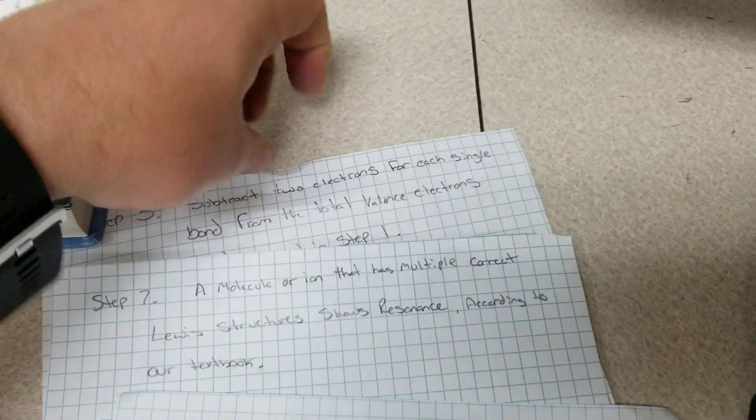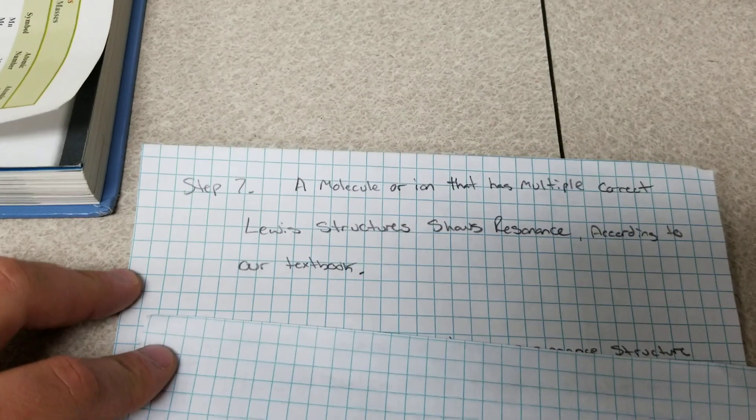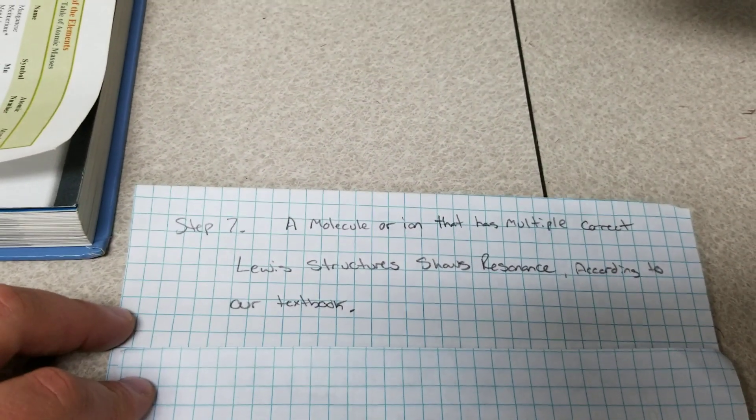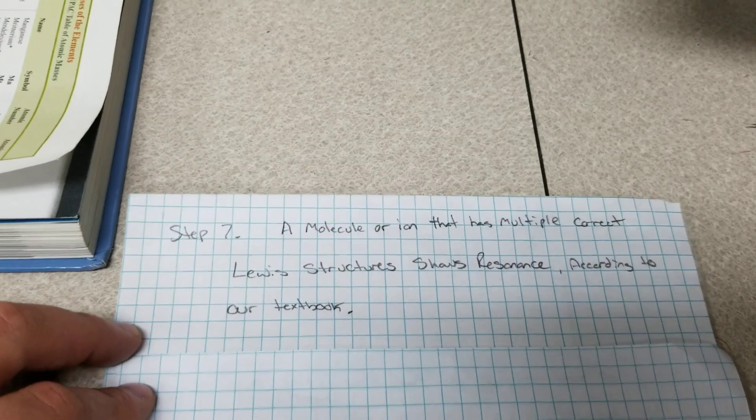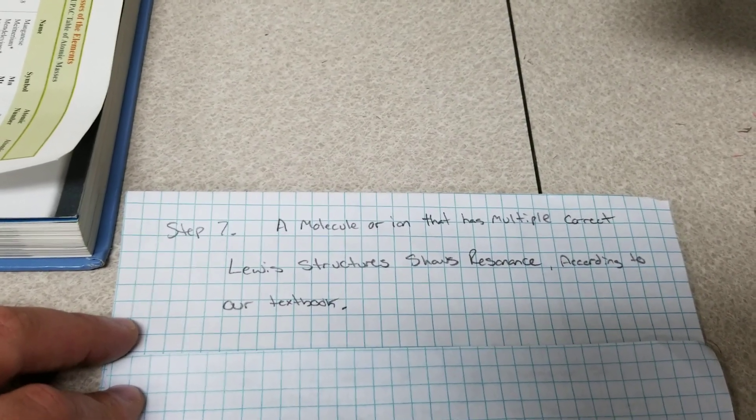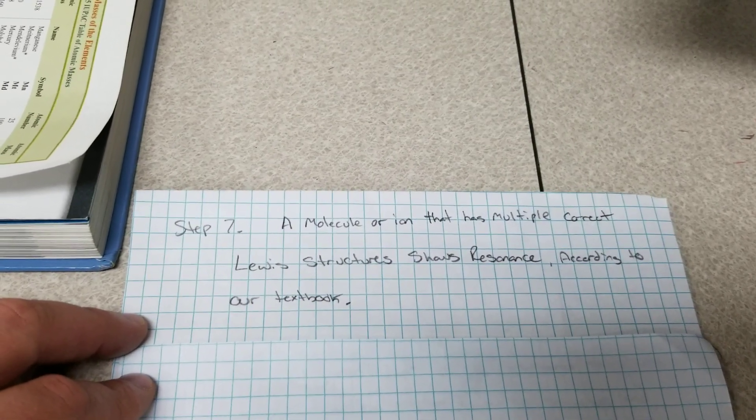Step seven is a step that I added. It says a molecule or ion, which is what we have, a polyatomic ion that has multiple correct Lewis structures shows resonance according to our textbook.